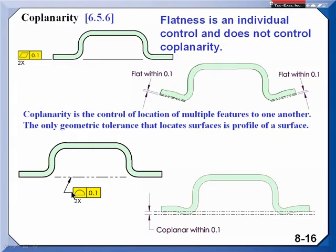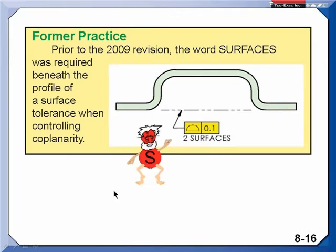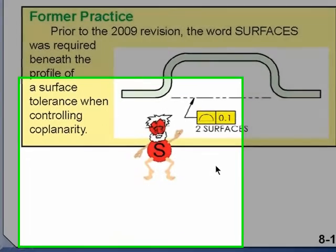Really nothing new because this is kind of like the FRITS, the feature-relating tolerance zone framework we looked at earlier. A former practice required that we say two surfaces and people said, can't we just say 2x and not have to write out the word surface? The committee agreed in the 2009 revisions. Now we can just say 2x here.